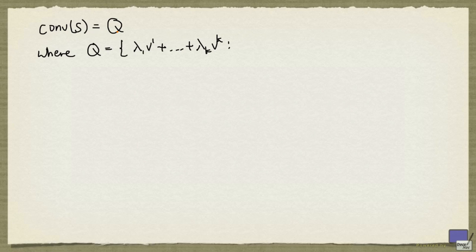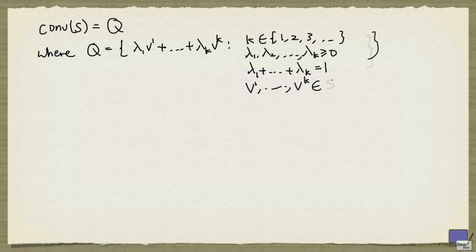the convex hull of S is equal to Q, where Q is defined as follows. So Q is all the possible convex combinations of points from S.